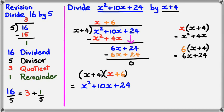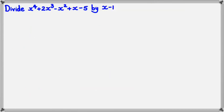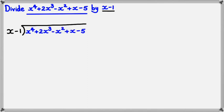I'm going to show another example, but this time we're going to be working with more variables. In the next example, I want to divide x to the power of 4 plus 2x cubed minus x squared plus x minus 5 by x minus 1. So, I know that this is the dividend, and we have the divisor. So, I'm going to set it up.